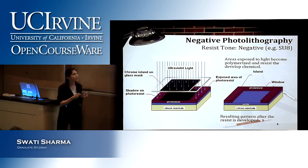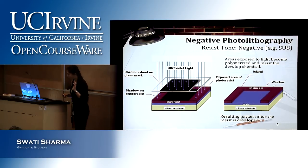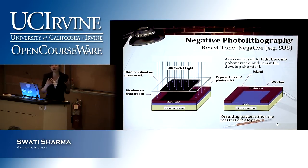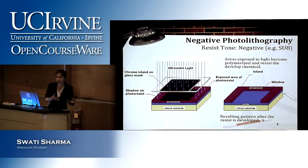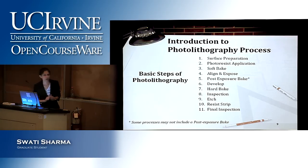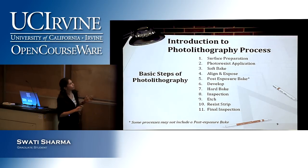We'll talk about mask fabrication as well. The key concept is: with a positive photoresist, you make the exact same pattern on the mask as what you want on your structures; with a negative photoresist, you make the opposite pattern on the mask.